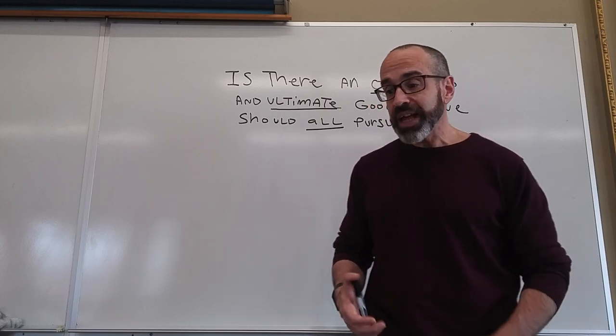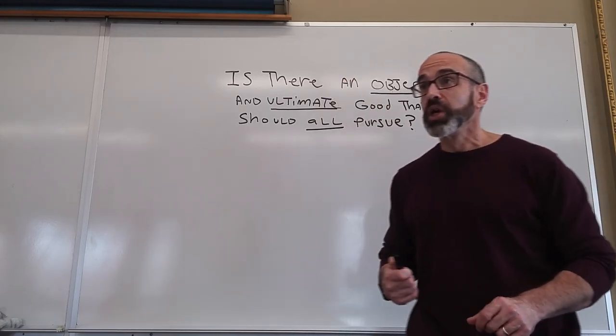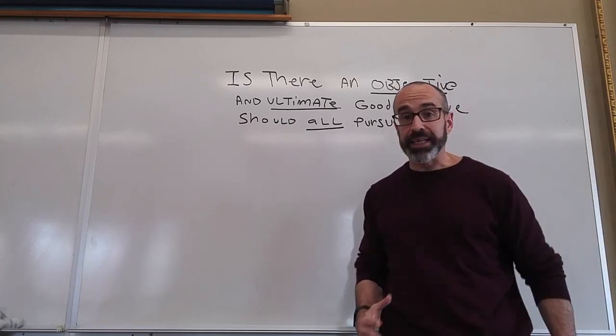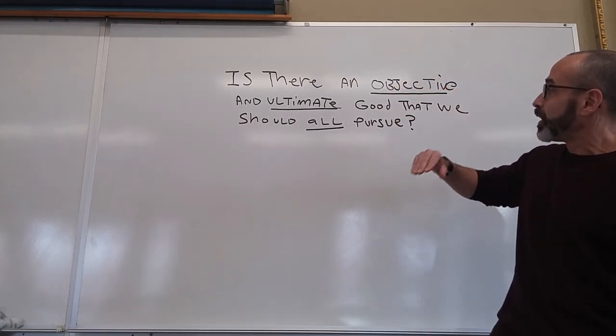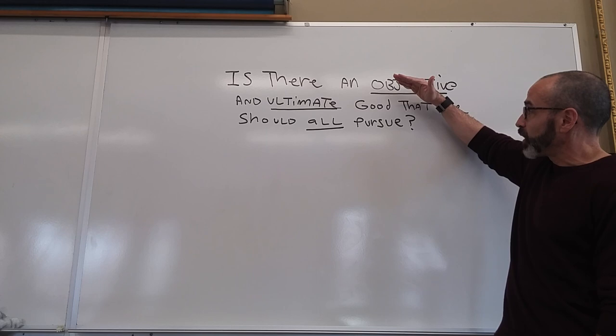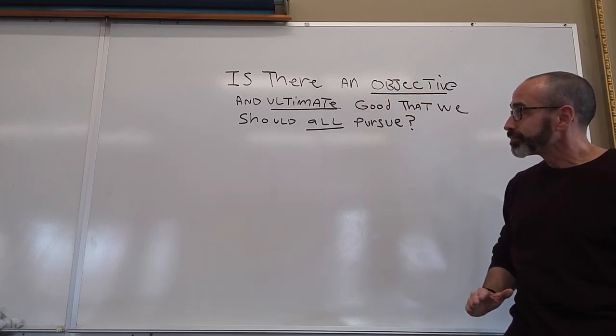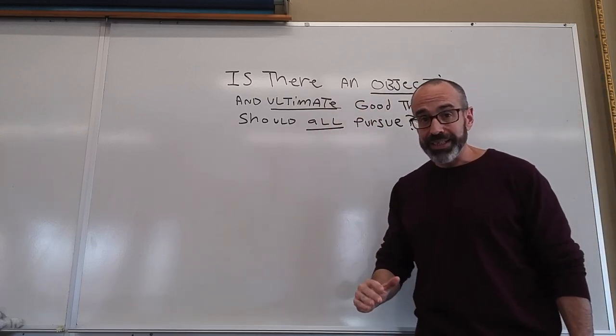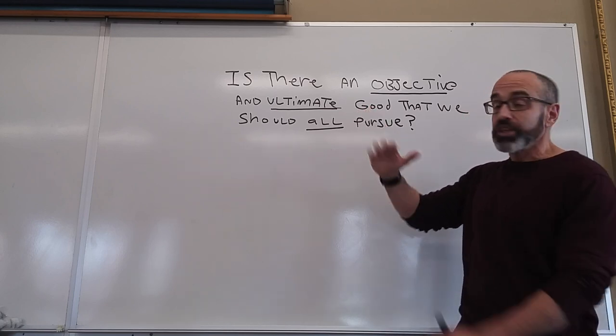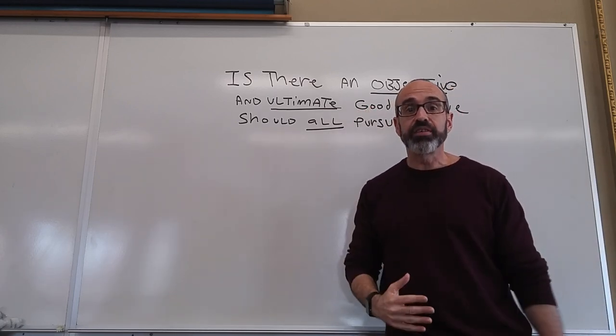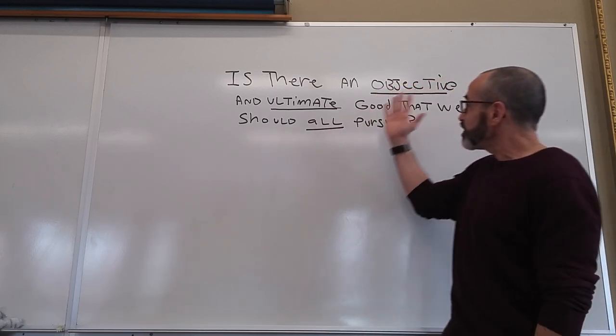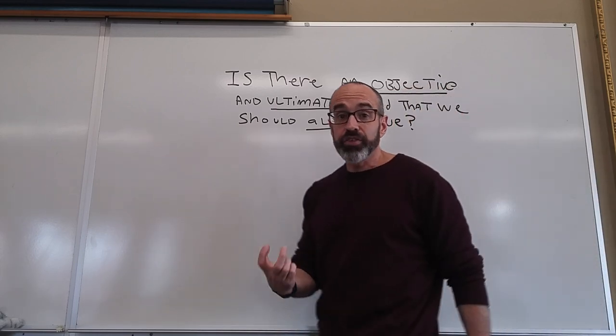Aristotle realizes that in order to answer this question, he has to prove three things. He has to prove that this good that we all seek is objective, that it is ultimate, and that it is universal. So let's take each of these words in turn. To say something is objective is to say that it's true regardless of what you believe.